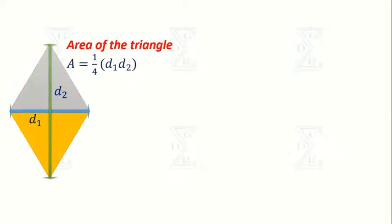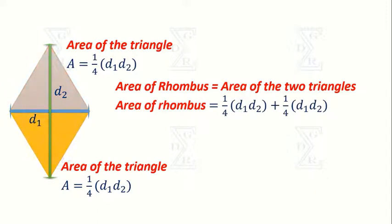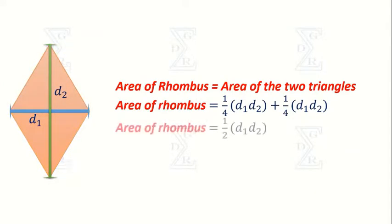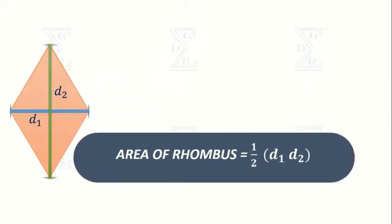As early we discussed, the two triangles are congruent. So the area of rhombus is equal to the sum of the two triangles. That is the sum of quarter D1D2 and quarter D1D2 is equal to half D1D2. So,